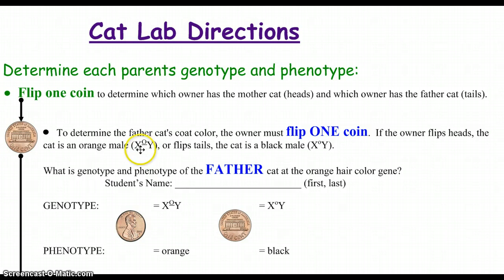We're going to draw a line underneath it to show it's a capital letter. If you flip a tail, you're going to be a black cat. Again, X, Y denotes a male, and we have a lowercase superscript O, and you notice how it's behind the X. Nothing is behind the Y. And we didn't put a line under it just so we can tell which is the capital, which is the lowercase. So the dad's going to write their first and last name here, and then I just showed the penny here.